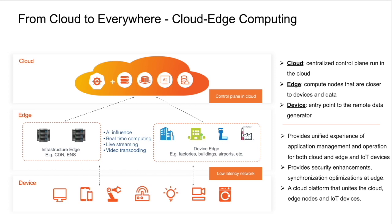In the new form of cloud architecture, cloud always consists of computing in both centralized data centers and distributed edges. It also allows existing cloud services and cloud development models to be adapted at the edge, including cloud-native capabilities such as containers, Kubernetes, and AI. This creates a cloud-edge collaboration platform where we can unite the cloud, edge nodes, and IoT devices.